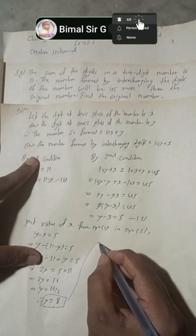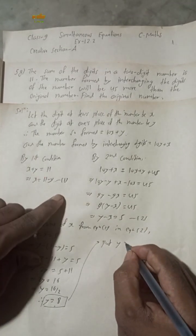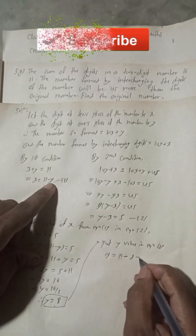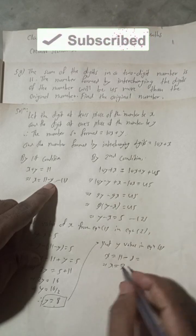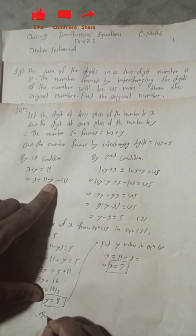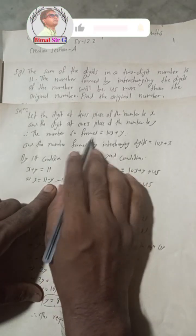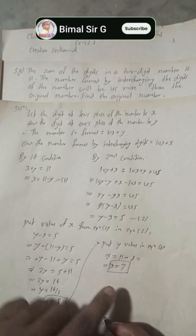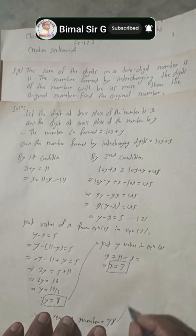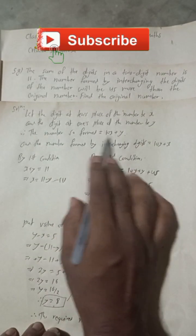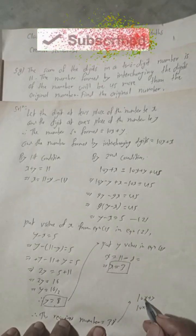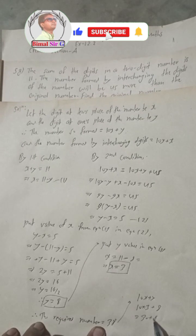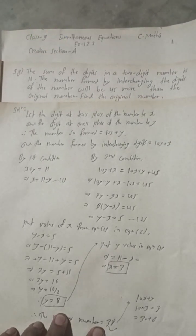Now put the value of y into Equation 1: x equals 11 minus y equals 11 minus 8, so x equals 3. Therefore, the required original number is 10x plus y, which is 10 times 3 plus 8, equal to 30 plus 8, which is 38. The required number is 38.